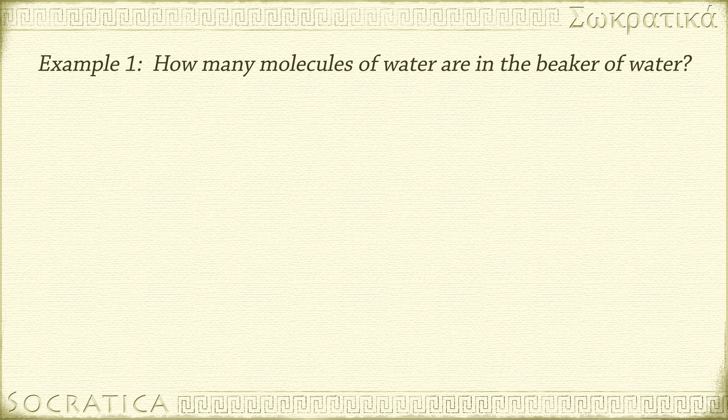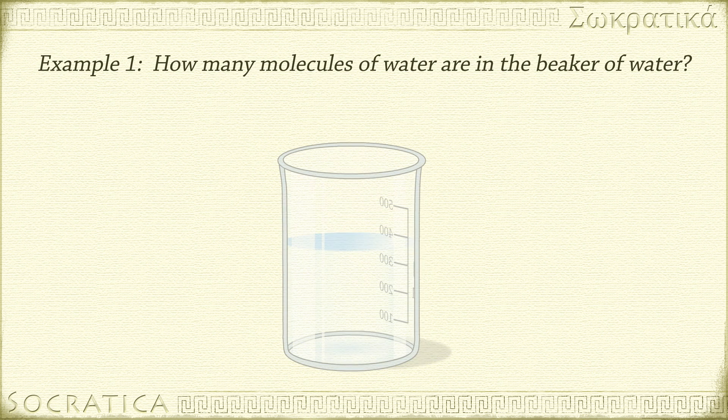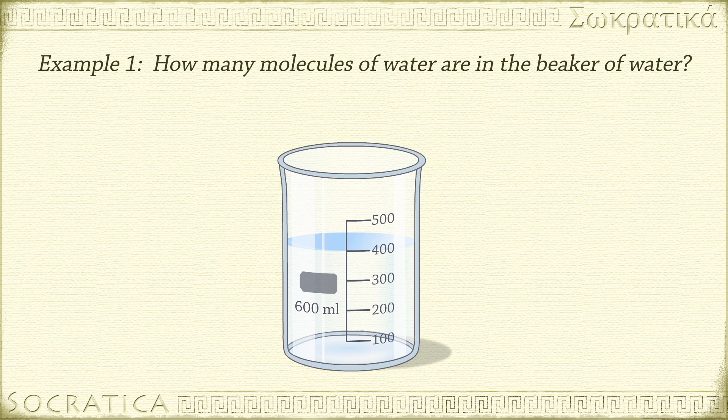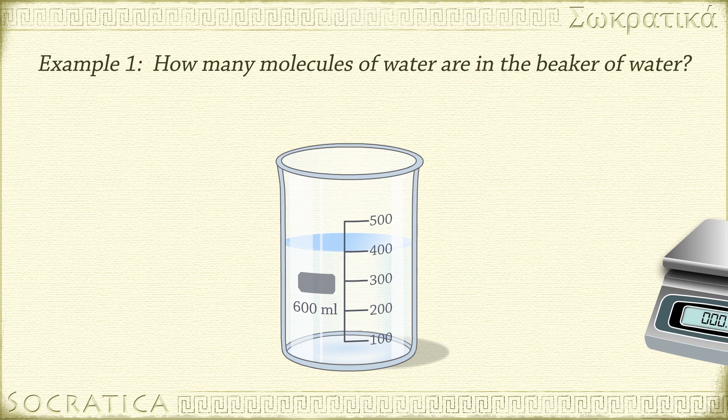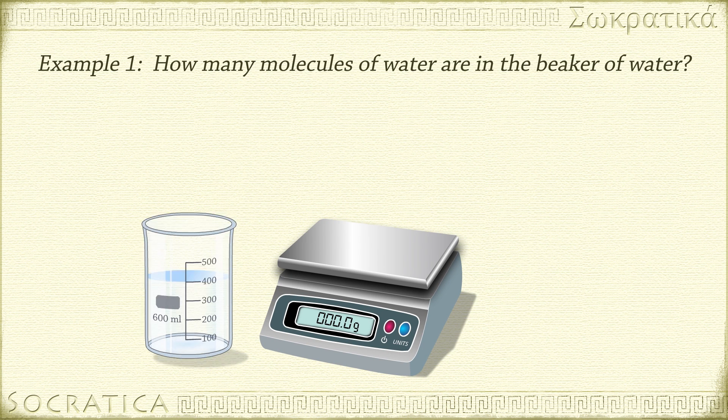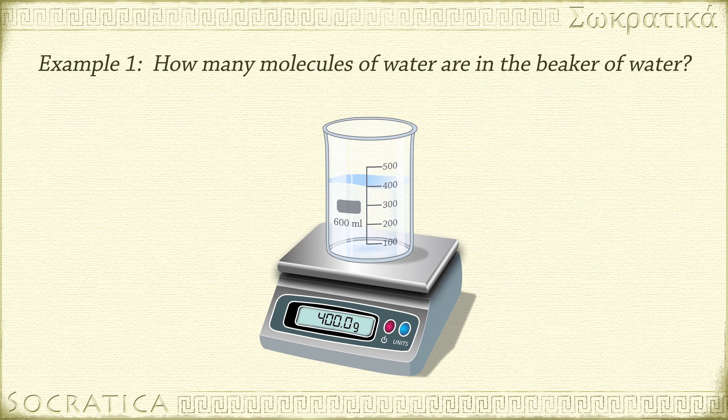Let's see an example of how to use the mole. We have a beaker full of water. If the beaker has volumetric markings on the side, it's easy to measure the volume. The beaker contains 400 milliliters of water. If we have a balance, we can measure the mass of the water. The beaker contains 400.0 grams of water. But what if someone asked you how many molecules of water are in the beaker? We'd have to do a little calculating, and that's when we'd use the term mole.